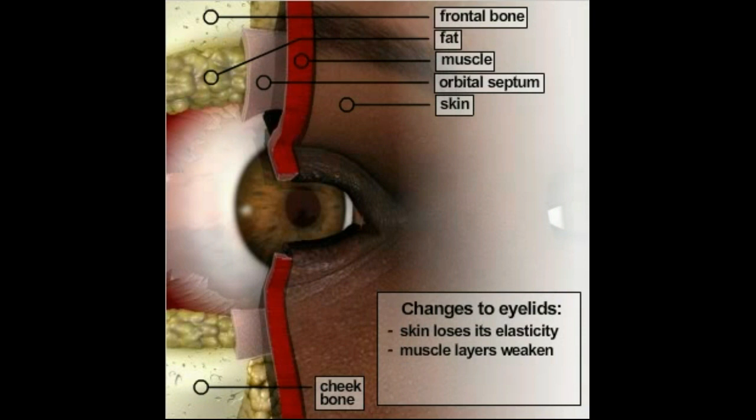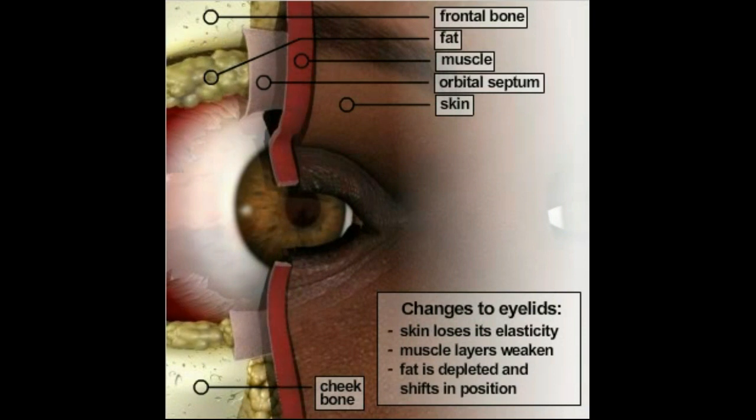Fat deposits normally give eyelids a full appearance. However, fat too is depleted over time and shifts in response to weakened, sagging muscles, which results in puffiness and bags around the eyes.